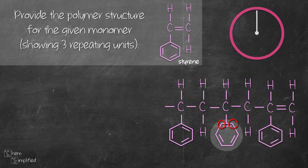The first error is here. The second error is that there shouldn't be any double bond present in the polymer structure. The monomer given contains only one C=C double bond, so when we draw out the polymer there should not be any double bond.